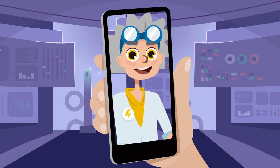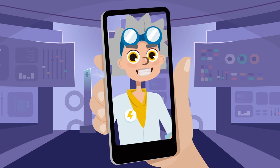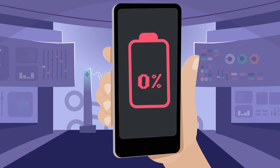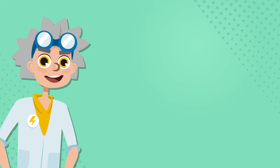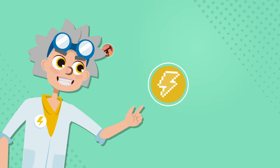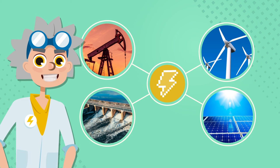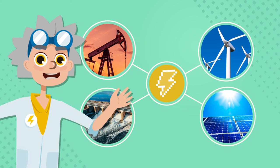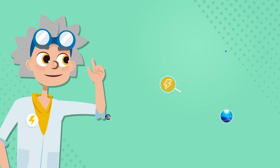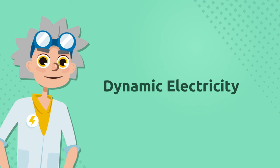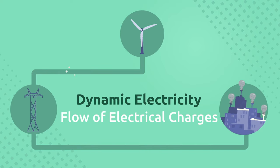Static electricity only lasts a short time, so obviously we can't use it to charge our cell phones or turn on a lamp. We need to obtain a different type of electricity using the natural resources around us. As I explained in our last video, the electricity we receive at home to run our electronic devices is called dynamic electricity. Dynamic electricity is the flow of electric charges.